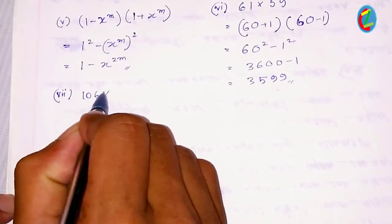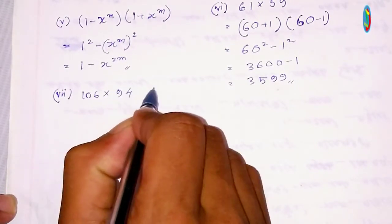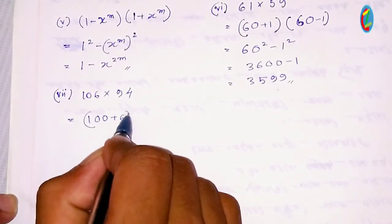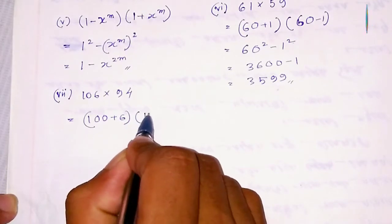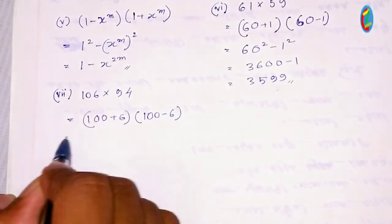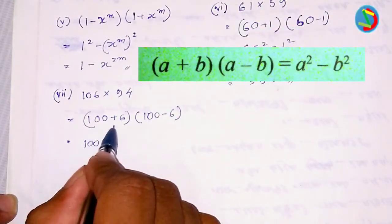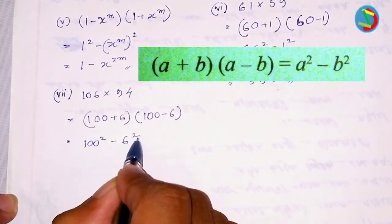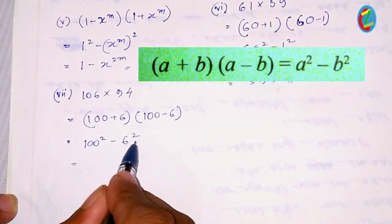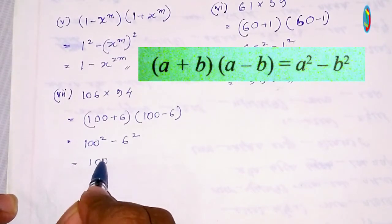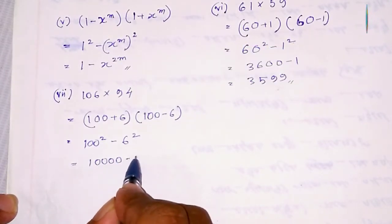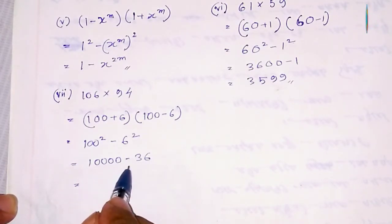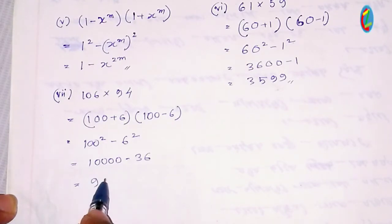Next is 106 times 94. We write this as (100+6)(100-6). Using the formula, we get 100² minus 6². 100 squared is 10000, and 6 squared is 36. So 10000 minus 36 equals 9964. That's the answer.